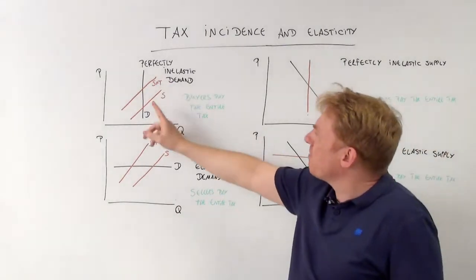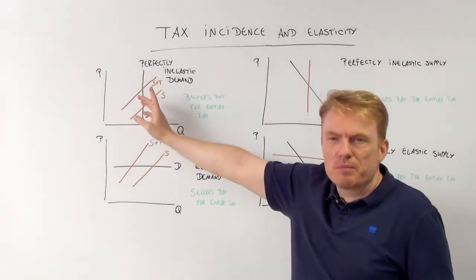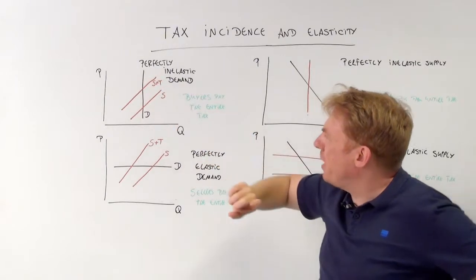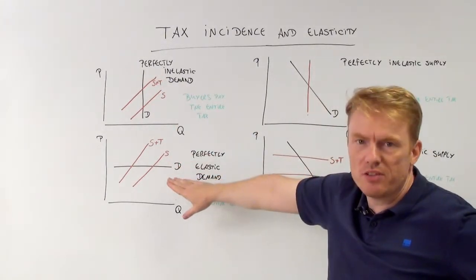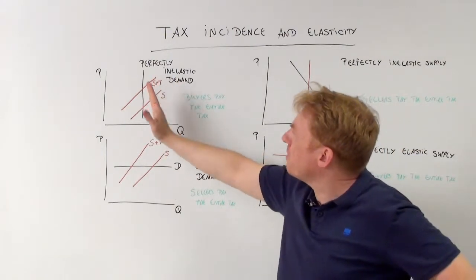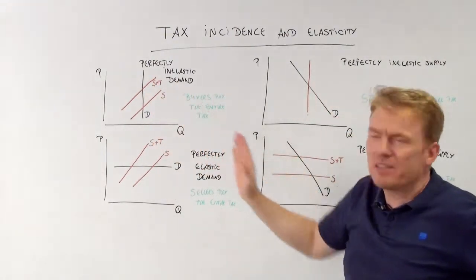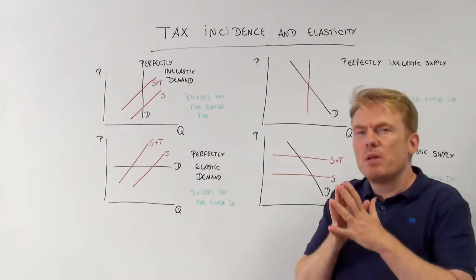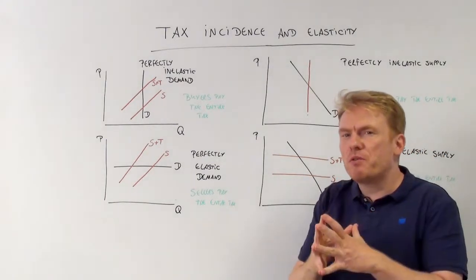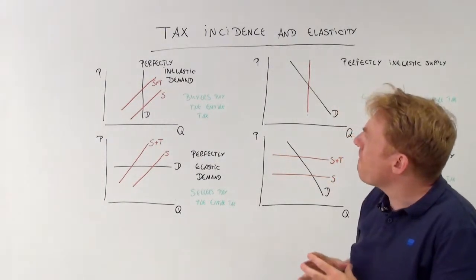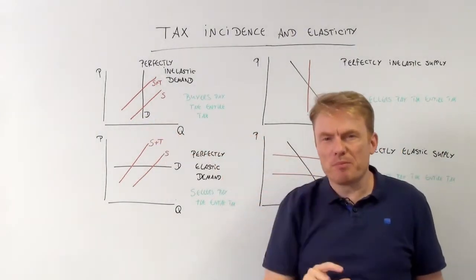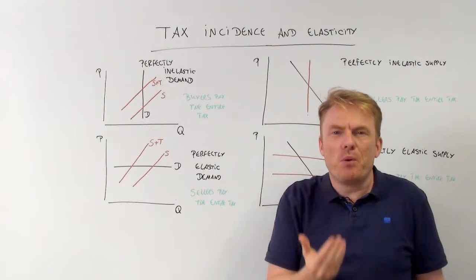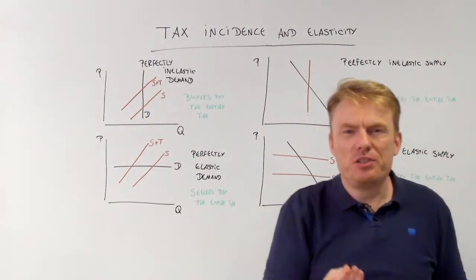For example, if the demand curve is this way, it is not totally horizontal, which is the case here, it is totally vertical. Perfectly inelastic demand means that the demand curve is totally vertical, which means that if the price goes up there is no fall in the quantity demanded.